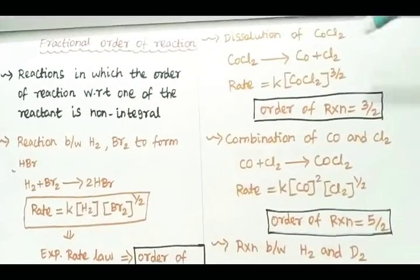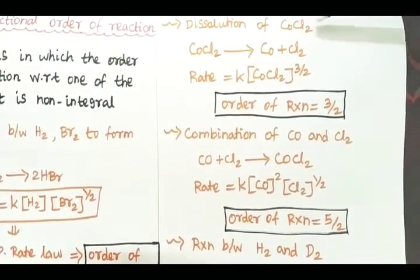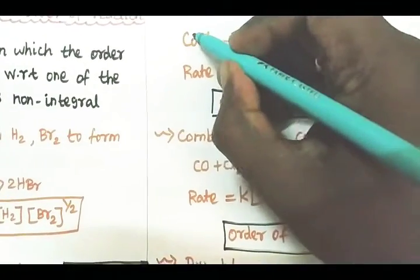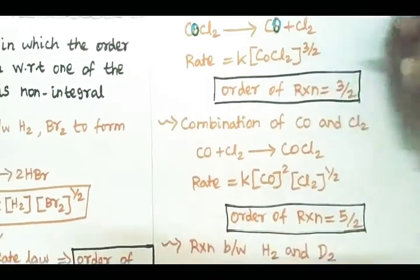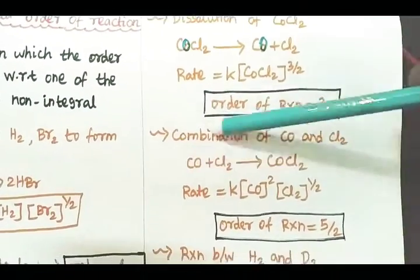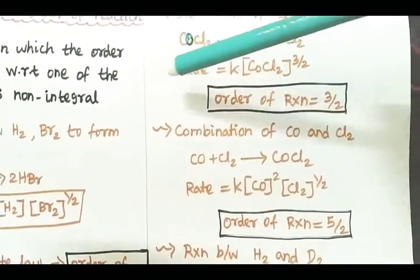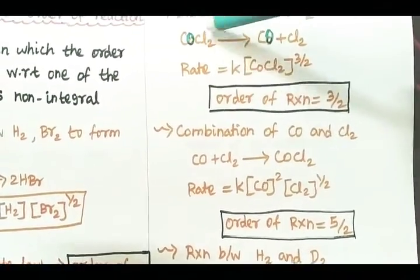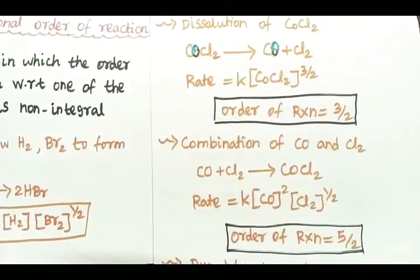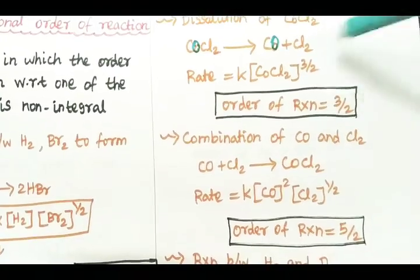The second example is the decomposition of carbon dichloride, COCl₂. The rate of reaction gives carbon monoxide and chlorine gas. Experimentally, the rate of reaction is k into [COCl₂] raised to the power 3/2. This is our assumption confirmed by experiment: rate = k[COCl₂]^(3/2).